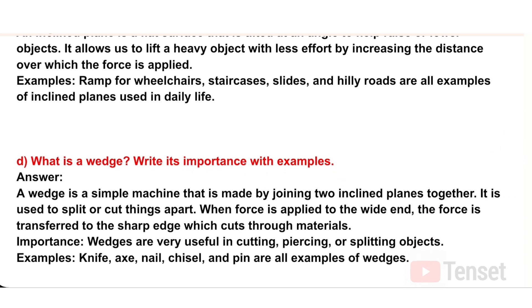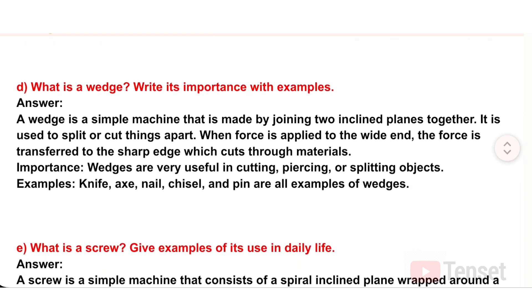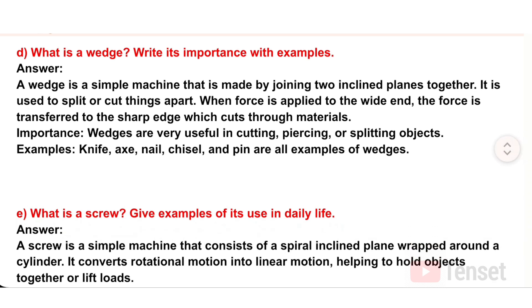D) What is a wedge? Write its importance with examples. Answer: A wedge is a simple machine made by joining two inclined planes together. It is used to split or cut things apart — when force is applied to the wide end, the force is transferred to the sharp edge which cuts through materials. Importance: wedges are very useful in cutting, piercing, or splitting objects. Examples: knife, axe, nail, chisel, and pin.